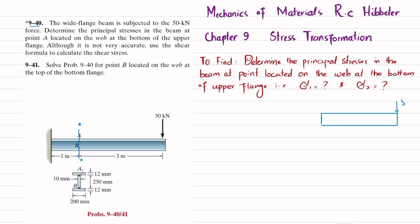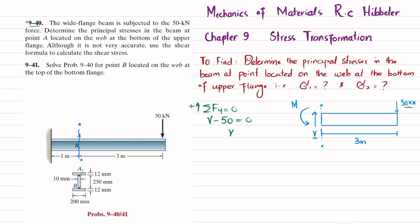At this section there is a point load of 50 kN, and the given length is 3 meters. When we cut at section AA, we have a shear force V acting upward and a moment. Applying the sum of forces in the y-direction equal to zero, with upward forces positive: V minus 50 equals zero, so the shear force V equals 50 kN.